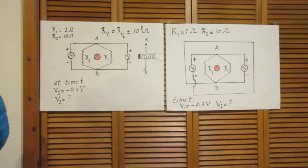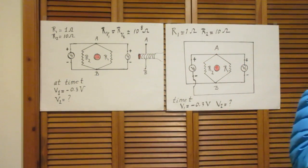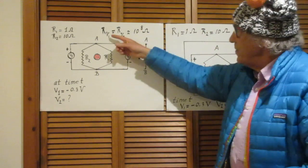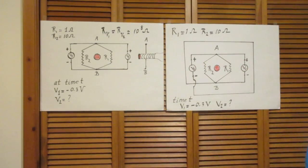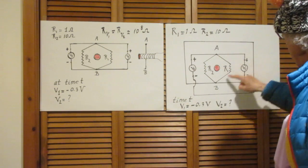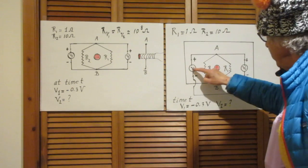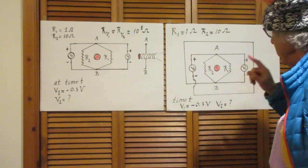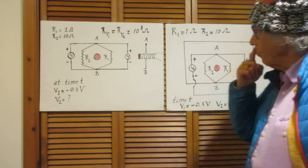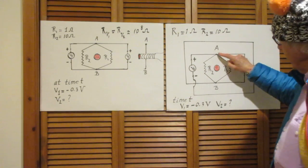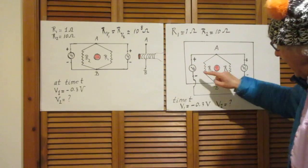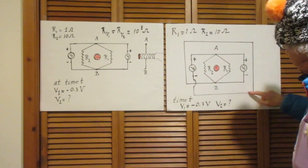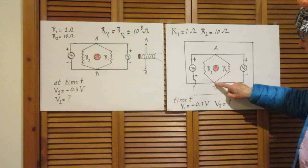Now comes the second question. You see here the same circuit. R1 is again 1 ohm, R2 is 10 ohms, and the voltmeters again have very high resistances of about 10 to the 8 ohms. Again, V1 is attached to point A and point B. And V2 is also attached to point A and point B, but in a different way than it is attached here. Look, V2 is attached here to point A and right here, it is connected to point B.